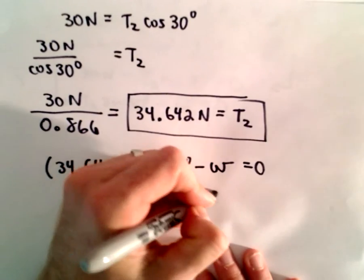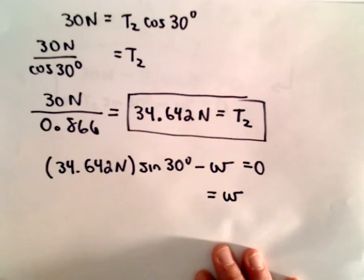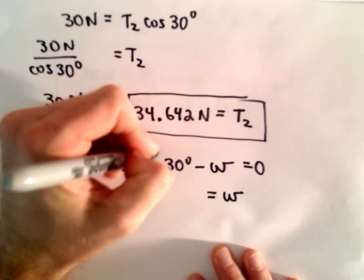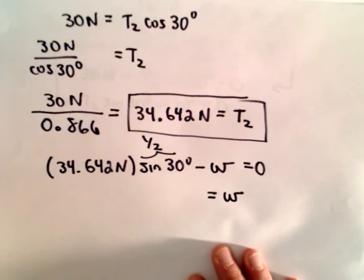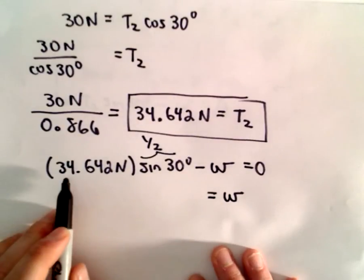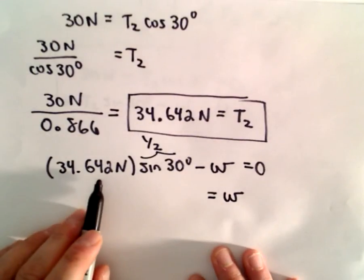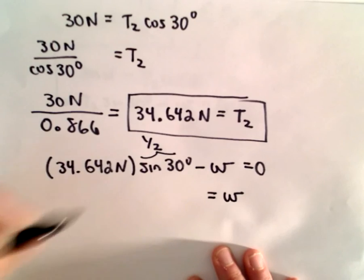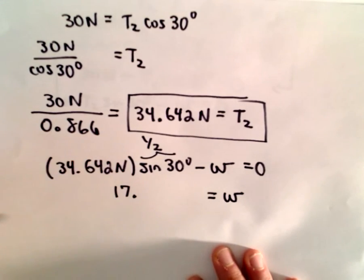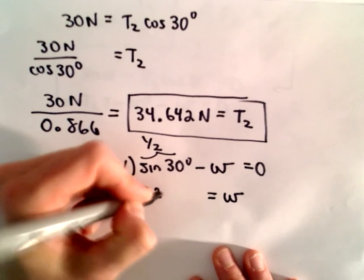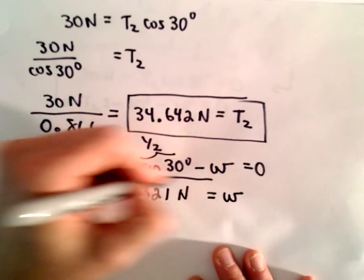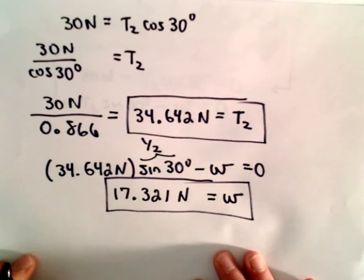So, now I'll do a couple steps at once. Well, we can add W to both sides. Recall that sine of 30 degrees, that's just 1 half. So, if we take 34.642 and multiply that by 1 half, we'll get 17.321 newtons. And, that's going to be the weight of our object.